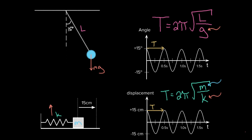You might think: doesn't a bigger pendulum bob also increase the rotational inertia, making it take longer? Yes, but the restoring force of a pendulum is also proportional to mass — it's gravity, so mg. If you increase the mass, you get more inertia but also more restoring force, and those completely offset. Mass does not end up in the pendulum formula. By contrast, spring force is Kx — increasing the mass of the block does not increase the spring restoring force, so mass stays in the numerator for the spring but not for the pendulum.